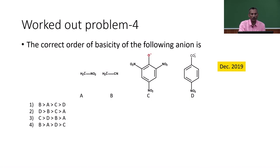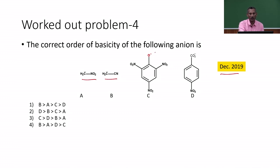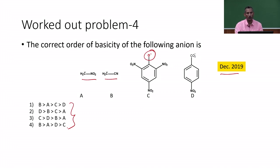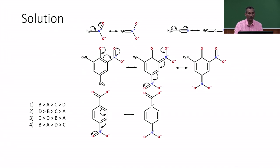Problem 4 (December 2019) asks for the correct order of basicity of four anions: the nitromethane anion (A), the acetonitrile anion (B), the trinitrophenoxide anion (C), and the para-nitrobenzoate anion (D). To solve this, we examine the resonance structures of each anion, since anion stability and basicity are inversely related. The more resonance structures an anion has, the more stabilized and less basic it is.